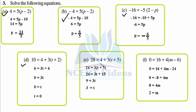Part e: 28 equals 4 plus 3 times (t plus 5). Transpose 4: 28 minus 4 is 24 equals 3 times (t plus 5). Open the bracket: 24 equals 3t plus 15. Transpose 15: 24 minus 15 is 9 equals 3t. Divide both sides by 3, so t equals 3.